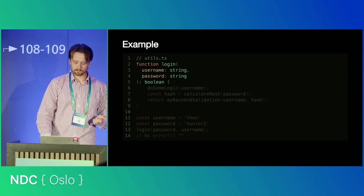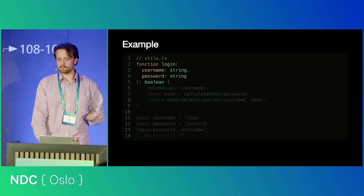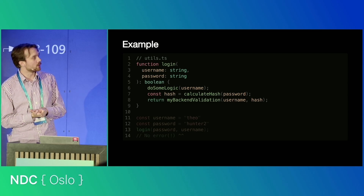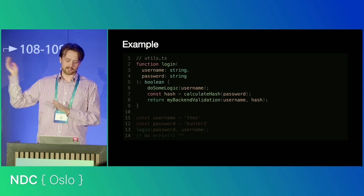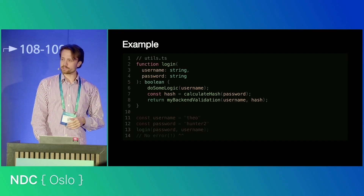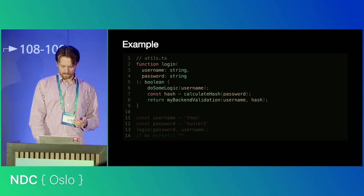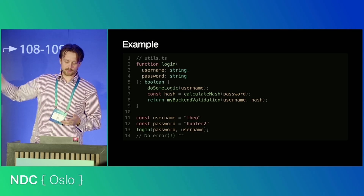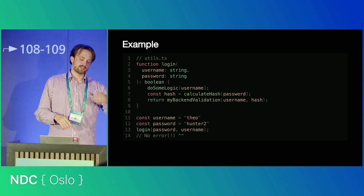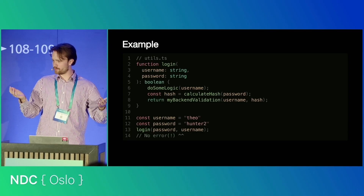But let's do an example instead. We have my login function in my service. It takes a username — string, sweet — and a password — string, sweet as well. We do some logic: on the username we calculate the hash, which I think is good security 101, and we send it to the back-end validation as well. And all those functions take in strings as well, so this type checks. Then we get the username from somewhere, maybe a login form. This is my username and my password — don't steal that one. We do our login function. I tell TypeScript, hey, check this out, type check it. It runs through, looks good. I don't write any tests, so the tests pass. And then I push it to production. Sweet. It works.